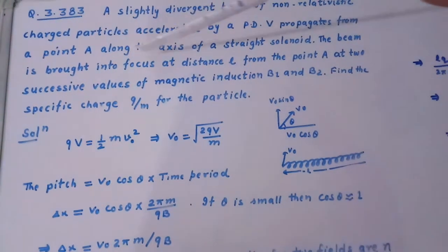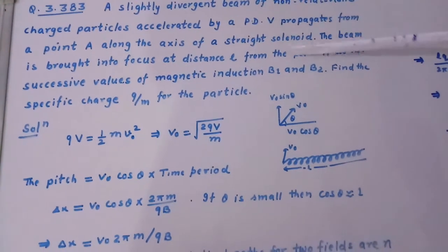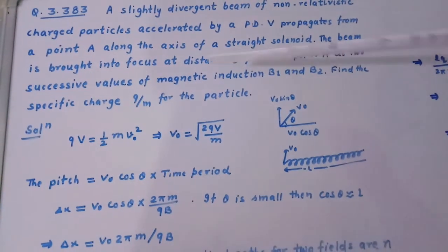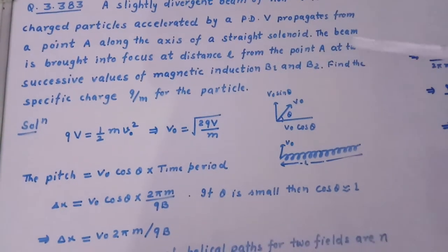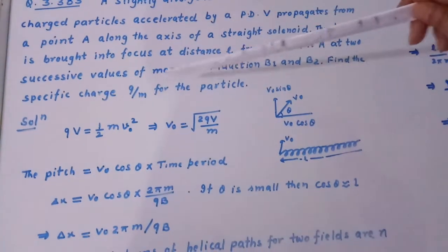The beam is brought into focus at distance L from the point A at two successive values of magnetic induction B1 and B2. Find the specific charge Q upon M for the particle.